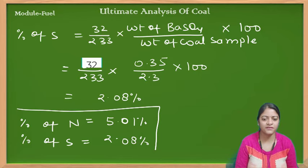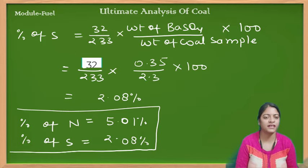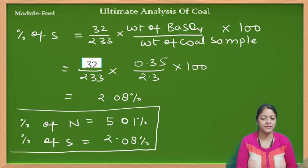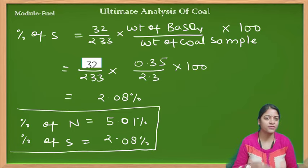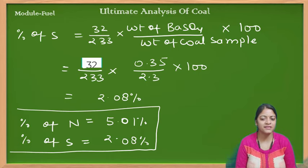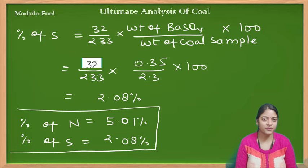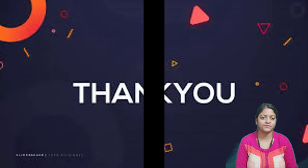तो अपनी आज की इस video में हमने देखा किस तरीके से Kjeldahl method से हम percentage of nitrogen calculate कर सकते हैं, और back titration क्या होता है। Percentage of nitrogen निकल के आया 5.01%, और percentage of sulfur निकल के आया 2.08%। I hope आप सभी को अच्छे से समझ में आया होगा। अगर आपकी कोई query है तो आप chat box में लिख सकते हैं। Thank you।